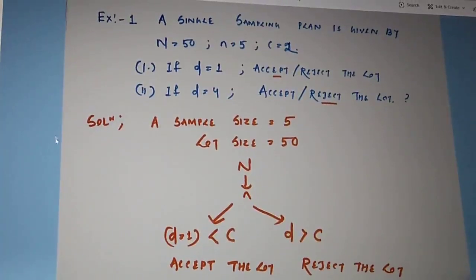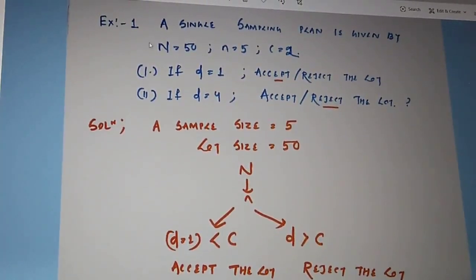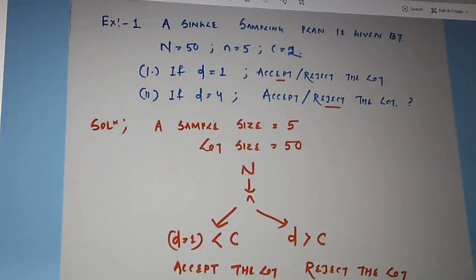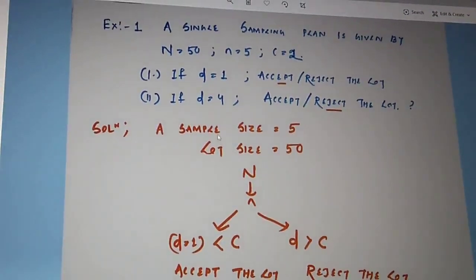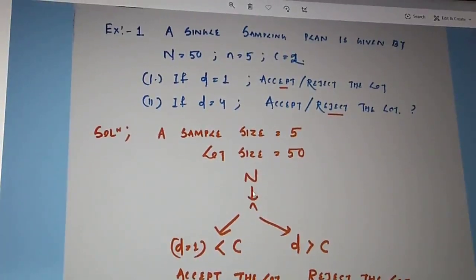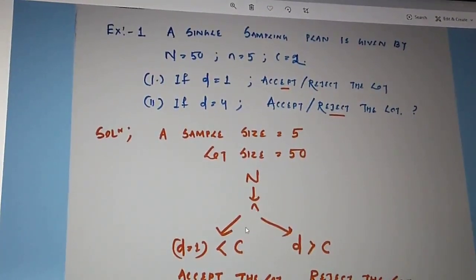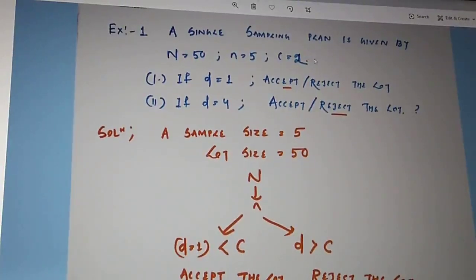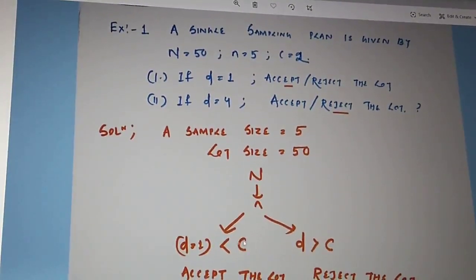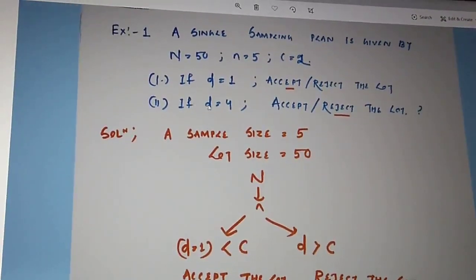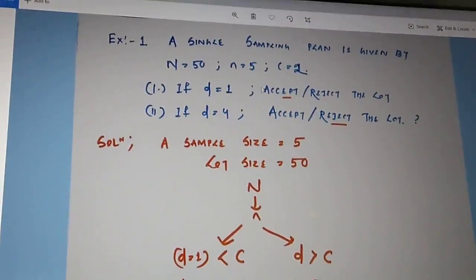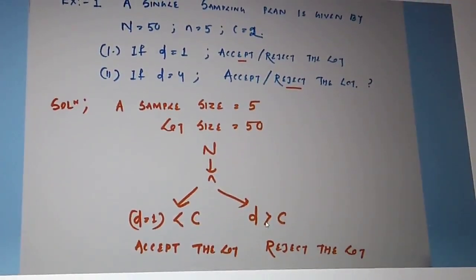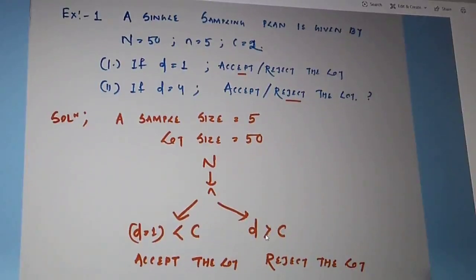In the solution, the total lot size is N equals 50 and the sample size taken is n equals 5. In the first part, d equals 1, which is less than C equals 2, so we accept the lot. In the second part, d equals 4, which is greater than 2, so we reject the lot. This is how the inspection process is carried out using the single sampling plan.